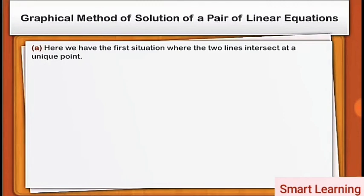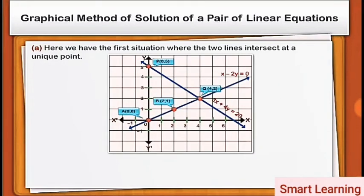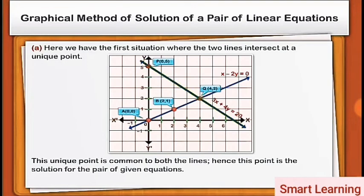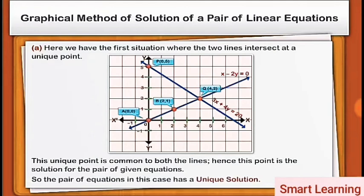Here we have the first situation where the two lines intersect at a unique point. This unique point is common to both the lines. Hence, this point is the solution for the pair of given equations. So, the pair of equations in this case has a unique solution.